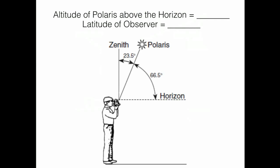The horizon is this line, the dotted line. And Polaris is 66 and a half degrees up from that. So that must mean that the altitude of Polaris is 66 and a half degrees, right?